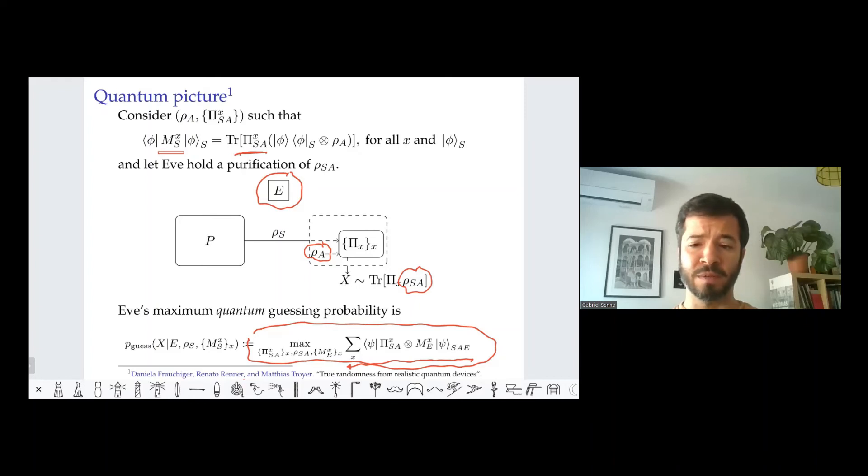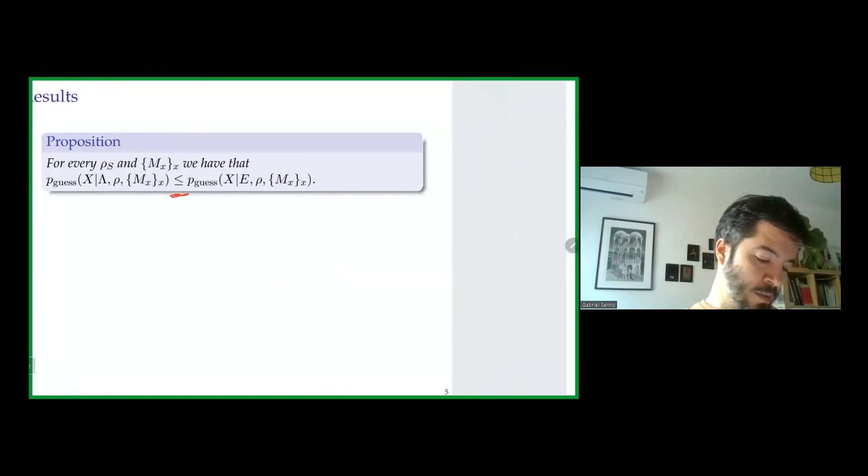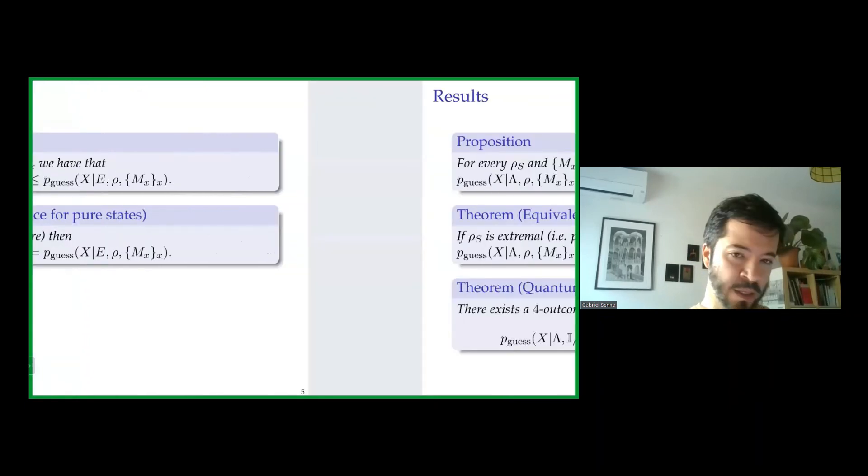Okay, now let's go to the results. So I will present the results in what I believe is an increasing level of interest. The first one is, as I guess most of you viewing this video expect, the quantum guessing probability is always at least as large as the classical. The second result is that these two coincide when the state is pure. So it was already known that we have equality for the case of extremal measurements, so this is like an analog of that result for extremal states.